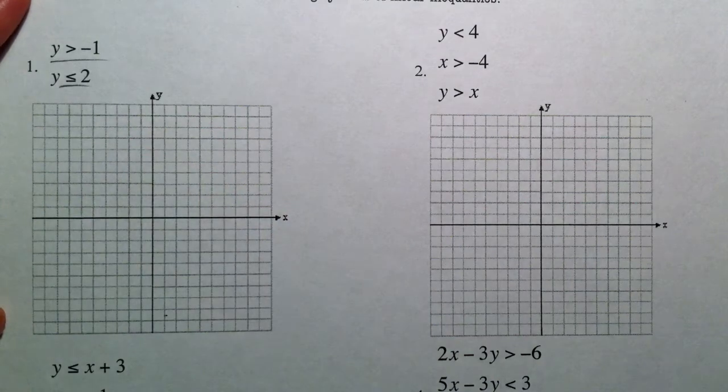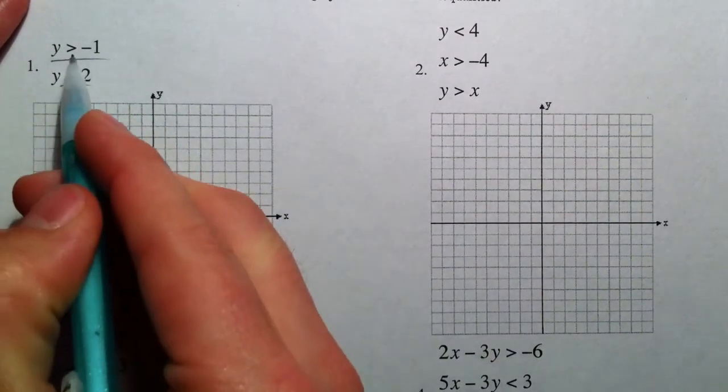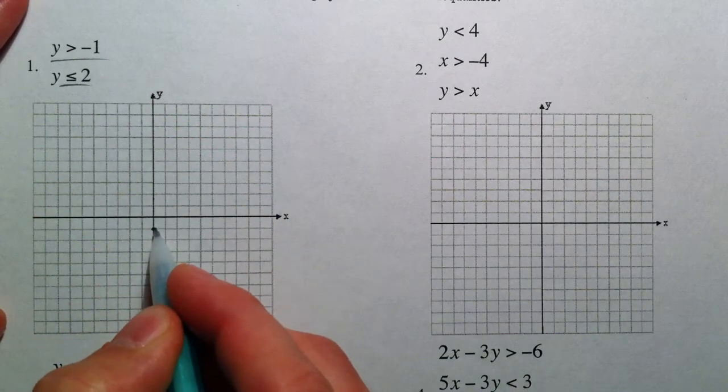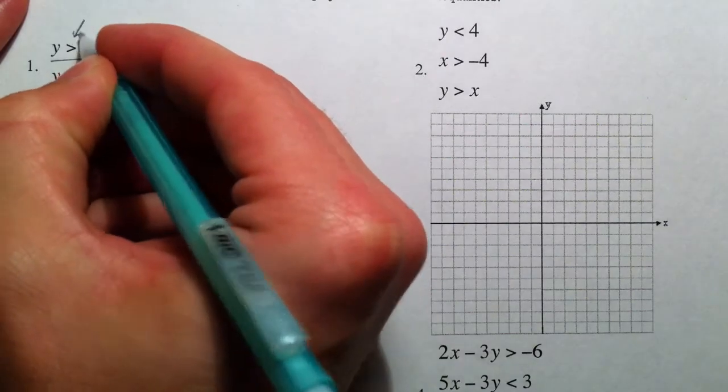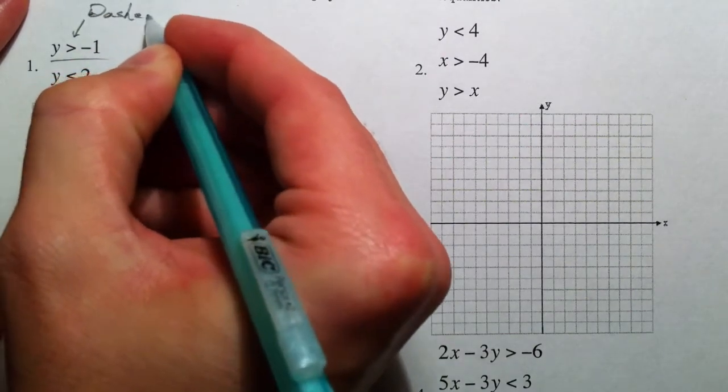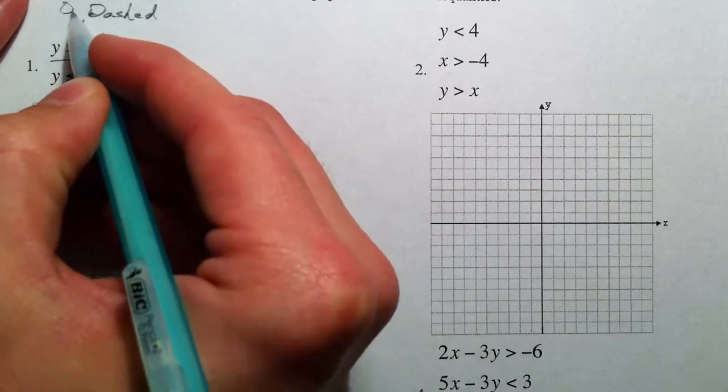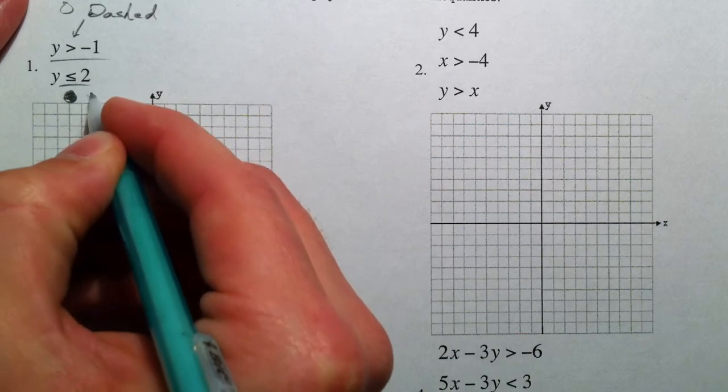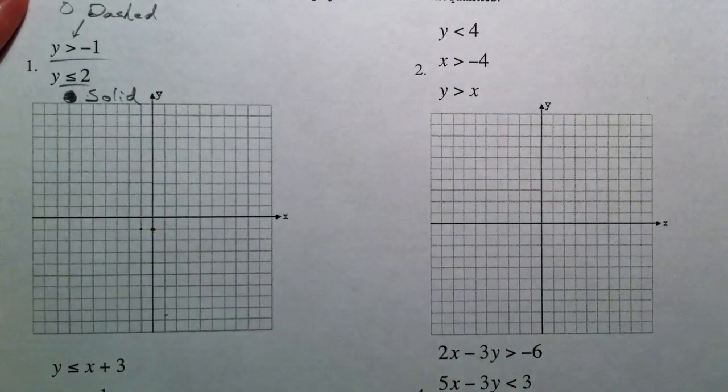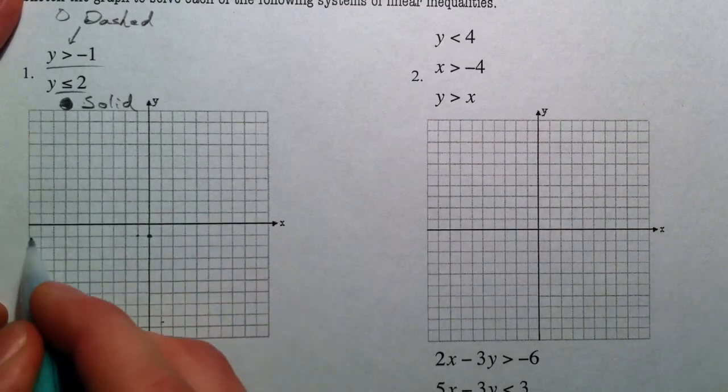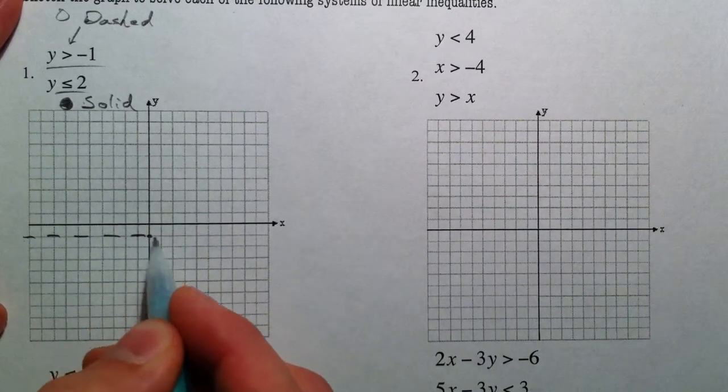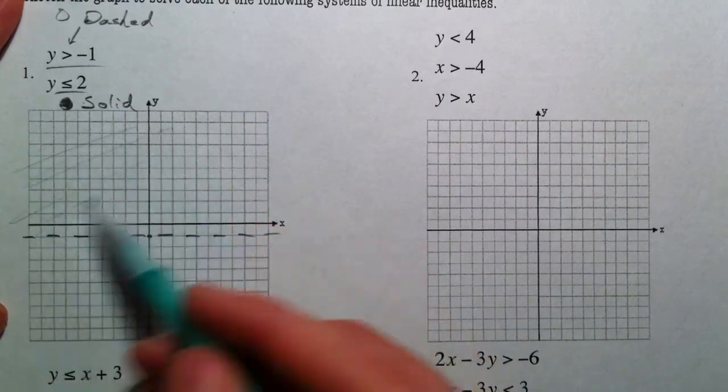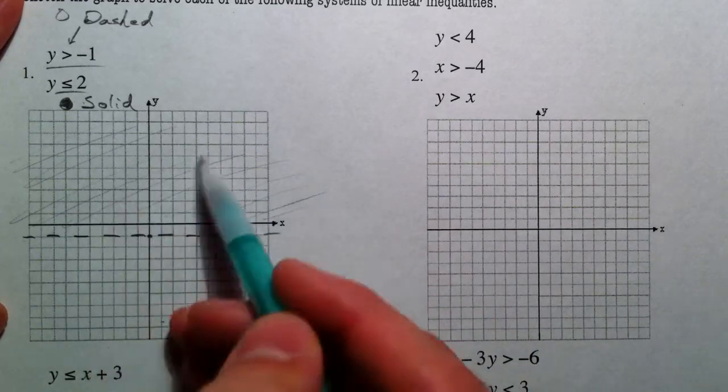Let's practice some of these horizontal and vertical lines. Y is greater than negative 1. So there's no X in here, and so it's not changing. All the Ys are just negative 1. This is dashed. Remember that if it's less than, we use an open circle or we use a dashed line. If it's equal to or equal to, we use a solid line, just like we use a solid circle when we're doing just number line stuff. And so Y is greater than negative 1. All the Ys that are greater than negative 1 are up here.